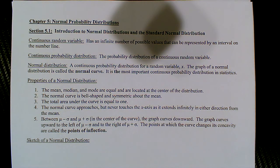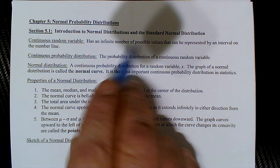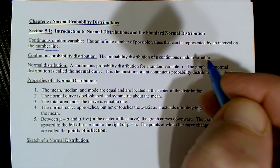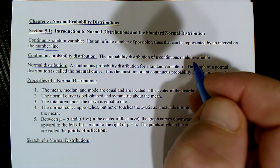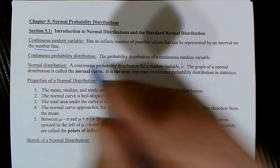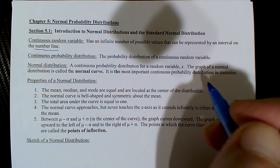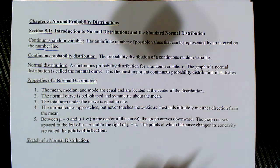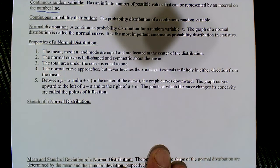This is chapter 5, section 5.1, which we call normal probability distributions. In section 5.1 we get introduced to normal distributions and the standard normal distribution. A continuous random variable has an infinite number of values and can be represented by an interval on a number line. A probability distribution for a continuous random variable is called a continuous probability distribution. The normal distribution is special — its graph is called the normal curve and it's the most important distribution we'll study.